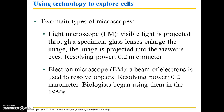The minimum resolving power of a light microscope is 0.2 micrometers. So anything that's 0.2 micrometers or above, you're going to be able to distinguish those objects from one another. If they are closer together than 0.2 micrometers, you're not going to be able to tell that they're actually two separate objects instead of one. An electron microscope uses a beam of electrons in order to resolve objects, and the resolving power is much more fine — 0.2 nanometers — and biologists began using them in the 1950s.